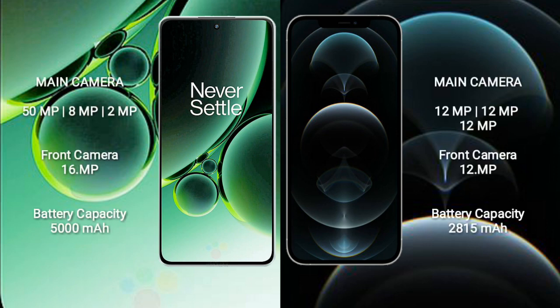OnePlus Nord 3 features a rear triple camera setup. iPhone 12 Pro also features a rear triple camera setup with 12MP plus 12MP plus 12MP cameras, and a front camera of 10MP to 12MP.